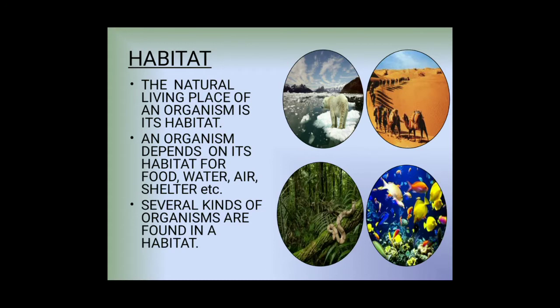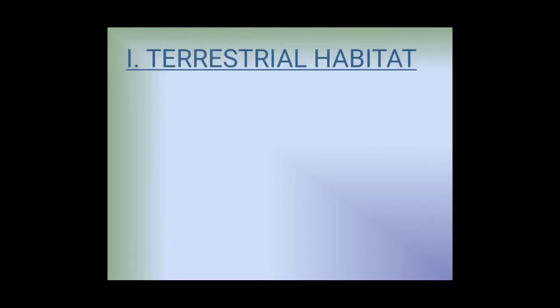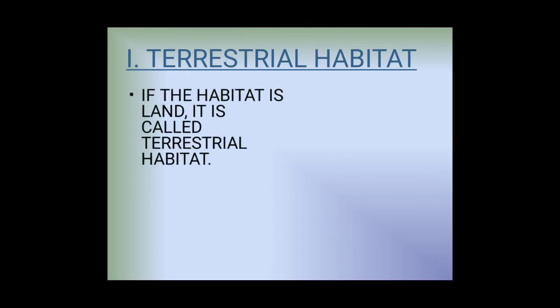Several kinds of organisms are found in our habitat. We find different varieties of organisms in each and every habitat. Habitat is further divided into two categories: terrestrial habitat and aquatic habitat.